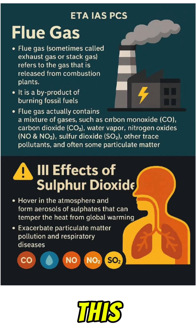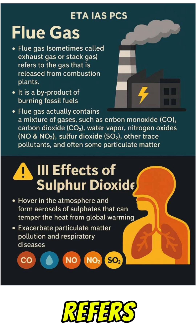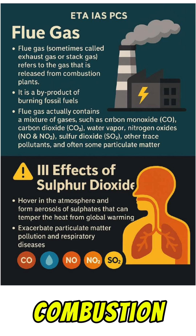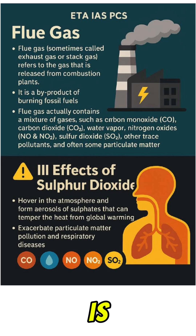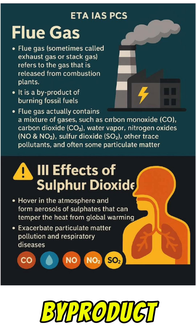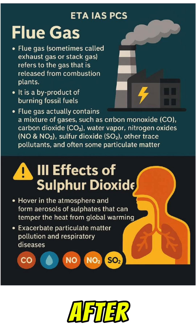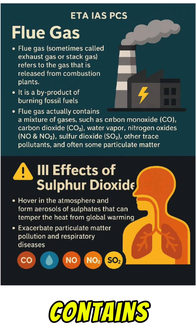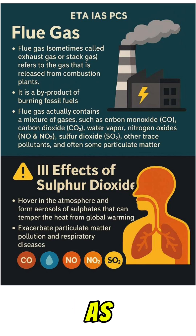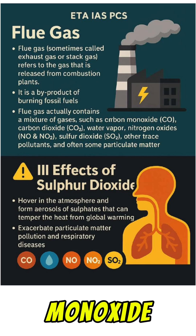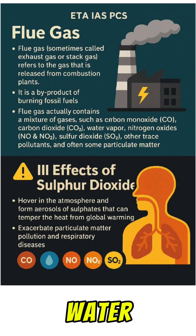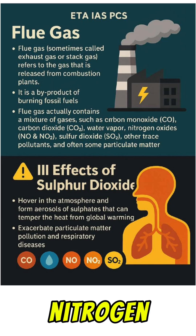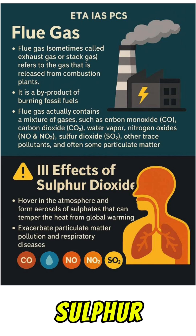What is flue gas? Flue gas, or exhaust gas, refers to the gas released from combustion plants. It is a by-product formed after burning fossil fuels and contains a mixture of gases such as carbon monoxide, carbon dioxide, water vapors, oxides of nitrogen, and sulfur dioxide.